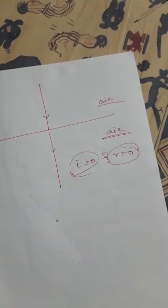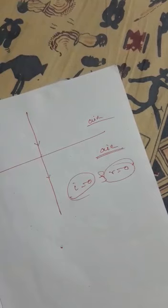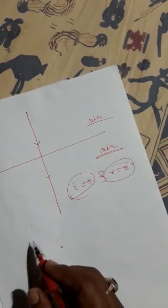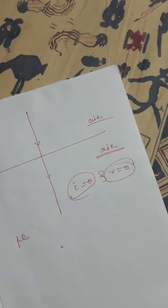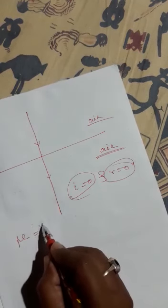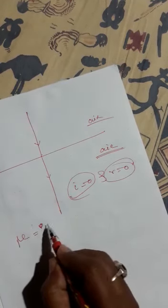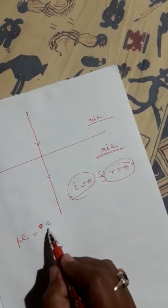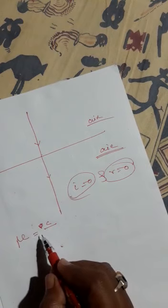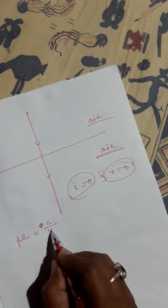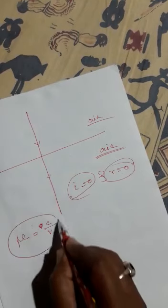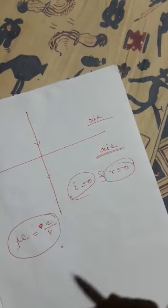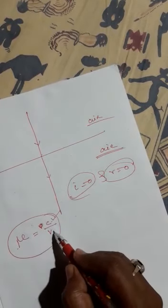There are two types: first, absolute refractive index, and second, relative refractive index. Absolute refractive index means the speed of light in vacuum or air divided by the speed of light in a medium. It is denoted by mu. So refractive index mu equals the ratio of speed of light in vacuum (C) by speed of light in any medium.